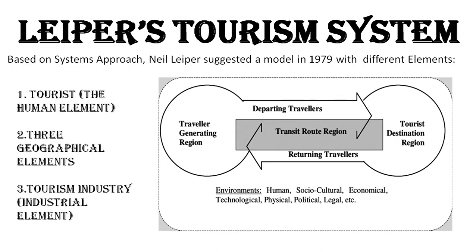Welcome to the channel. In this video we will learn about Leiper's Tourism System — a very popular model given by Neil Leiper in the year 1979. We often identify it by TGR, TDR, and TRR. Students of tourism know it by these three abbreviations.